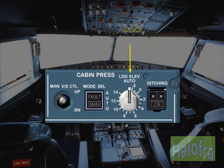The landing elevation selector normally remains in the auto position. Landing elevation, which is required by the pressurization system, is then provided by the FMGS. If the landing elevation is not available from the FMGS, then it can be set manually using this selector. The guarded ditching switch is provided to close all valves so that the aircraft can be sealed in the unlikely event of a ditching.